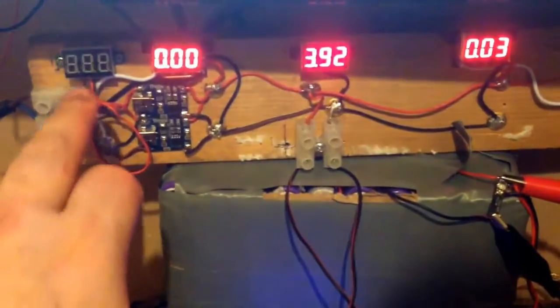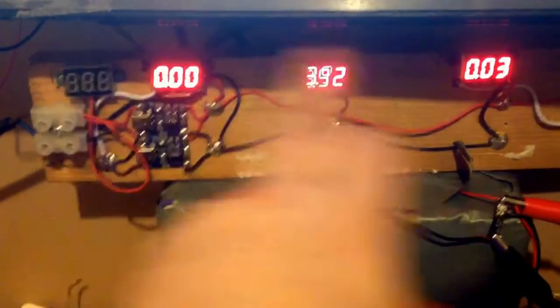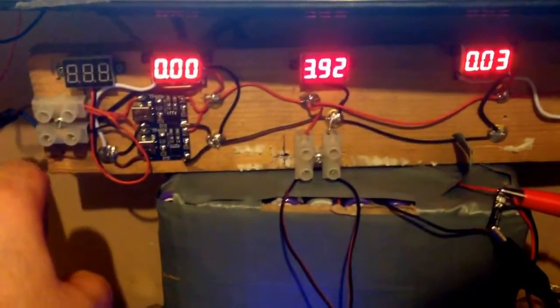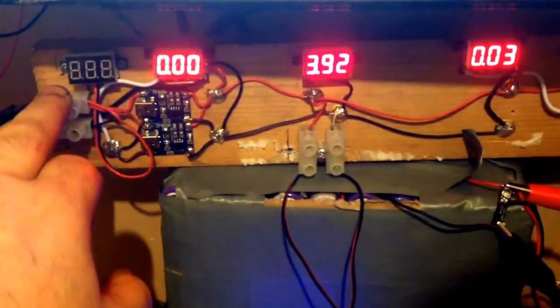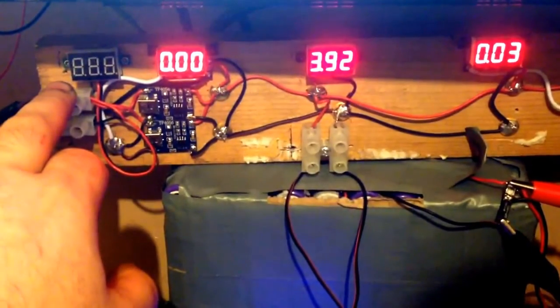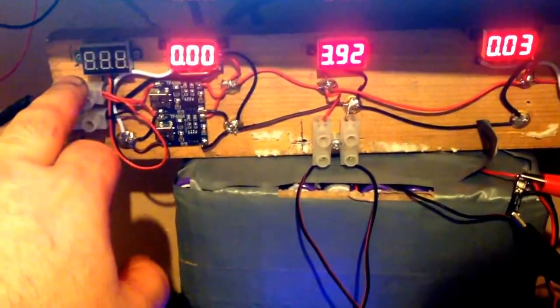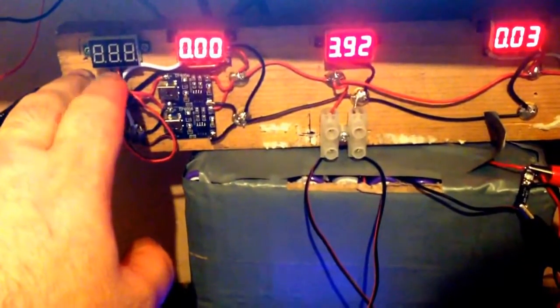Just above here is my charging system. Here we have the solar panels. This is four panels at 6 volts in a parallel configuration to produce more amp hours.